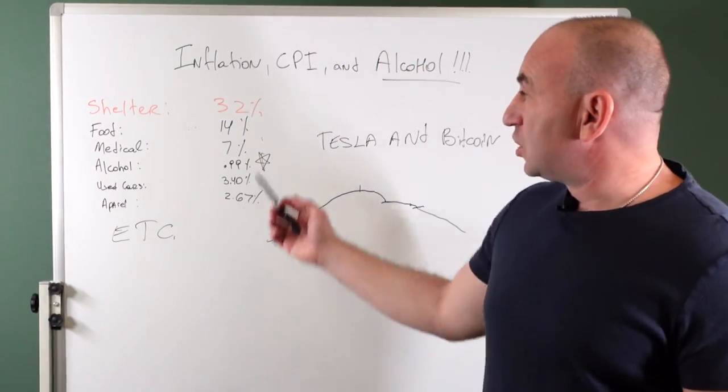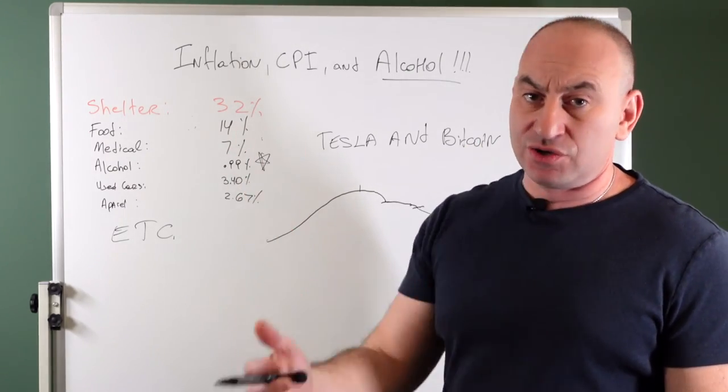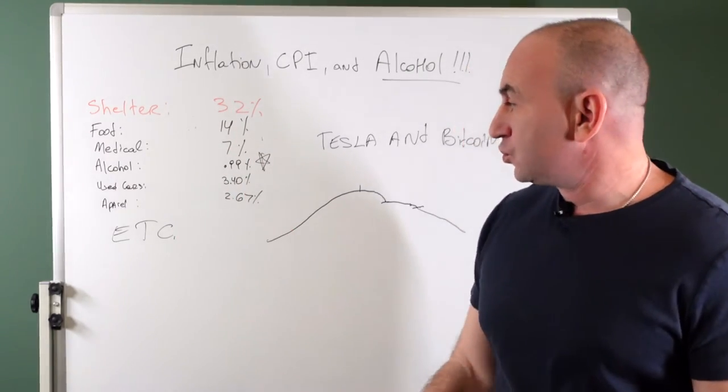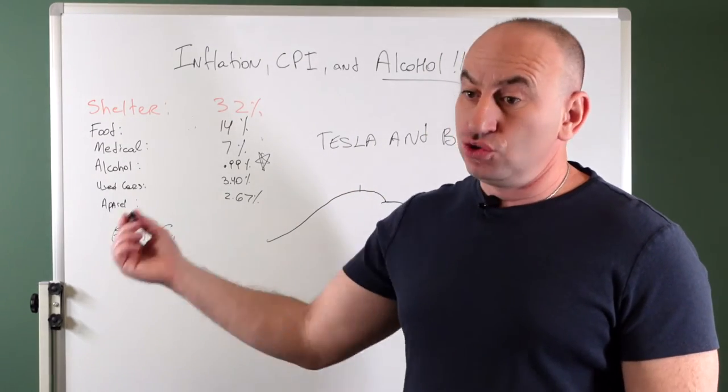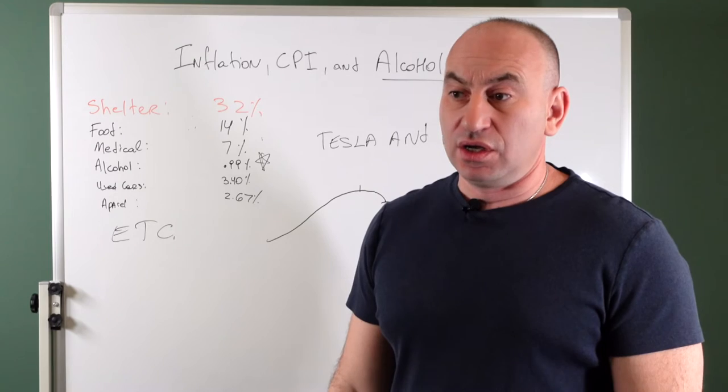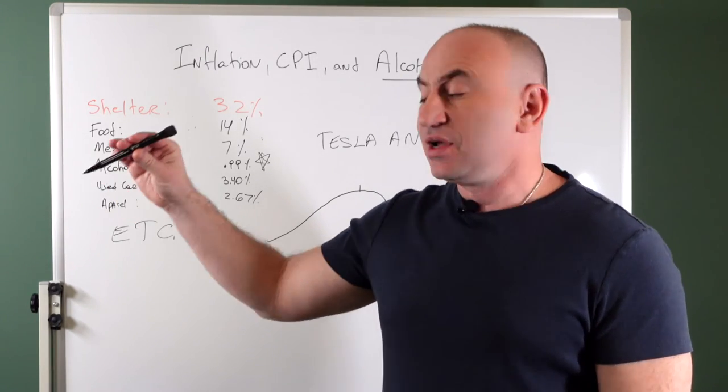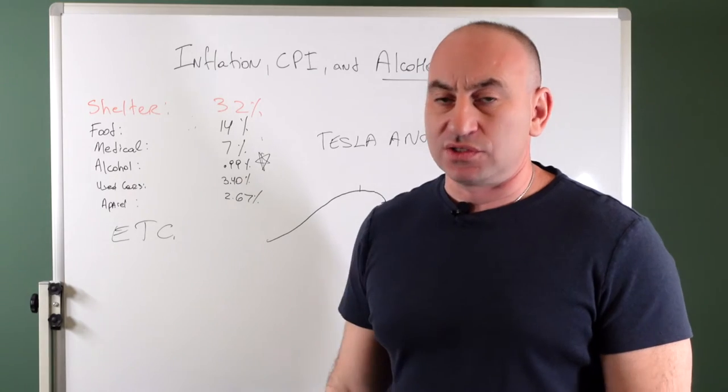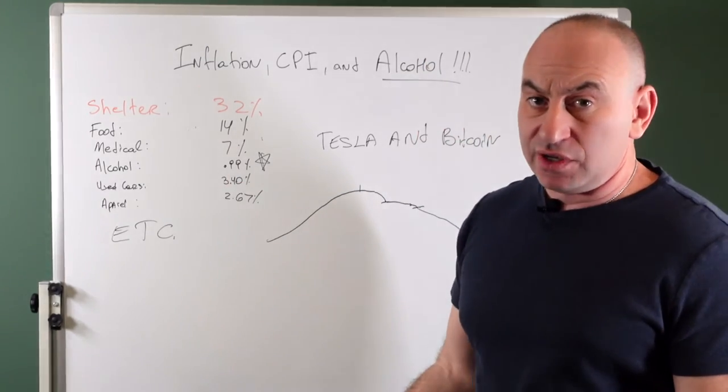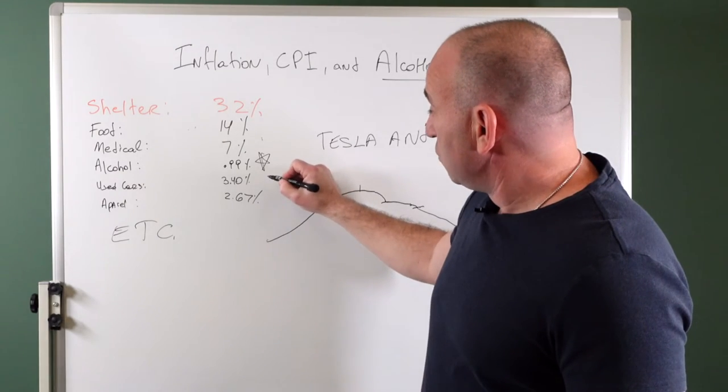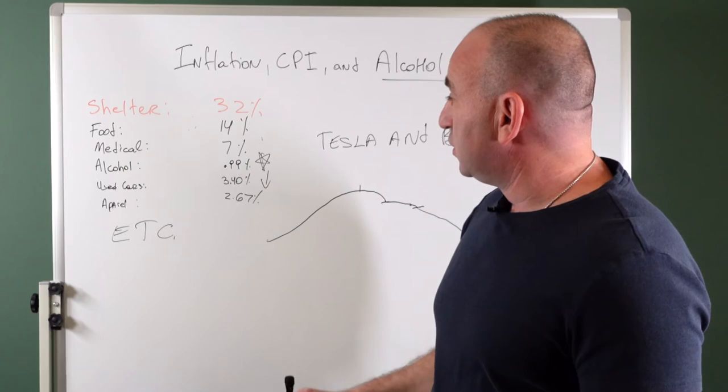Used cars 3.4% of the consumer basket. So out of a 100% budget, out of $100, 3.4% goes towards used cars. Then there's new cars. And the prices of used cars shot up during the pandemic. They've been going down consistently over the past few months. So next time the CPI reading comes in,